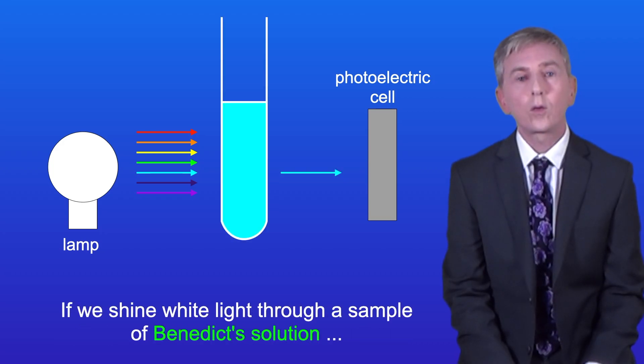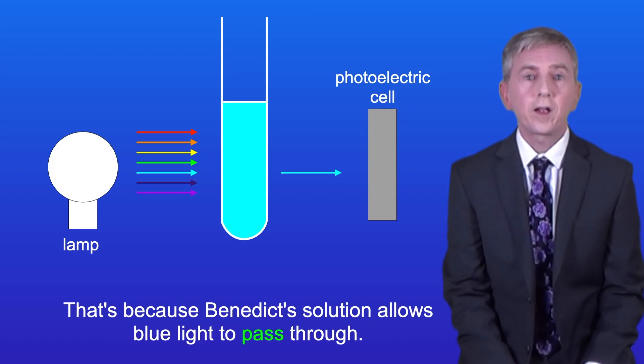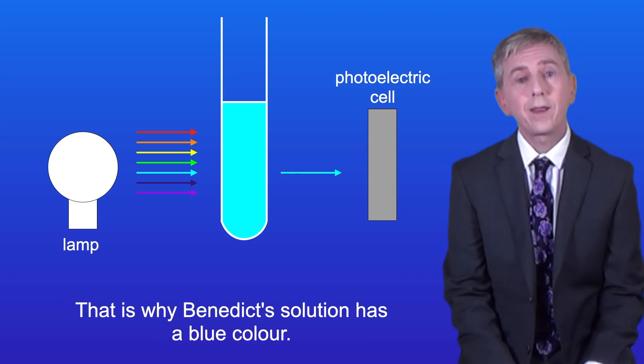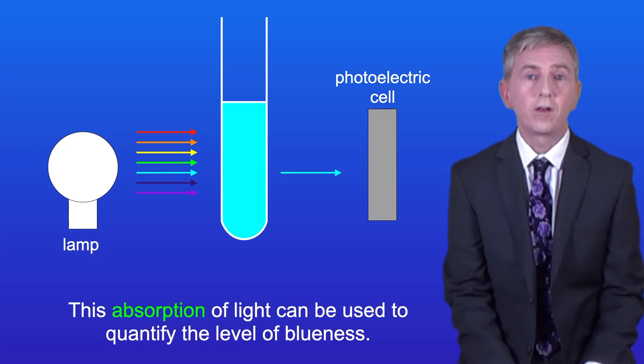If we shine white light through a sample of Benedict's solution, then all of the colors in white light will be absorbed, apart from blue. That's because Benedict's solution allows blue light to pass through, and that's why Benedict's solution has a blue color.